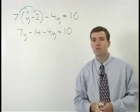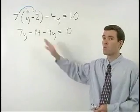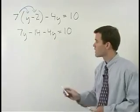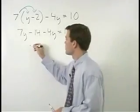The difference between this problem and the previous example is that you can simplify this left side one step further by combining 7y minus 4y to get 3y.